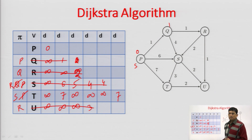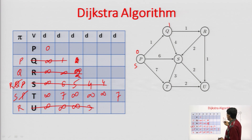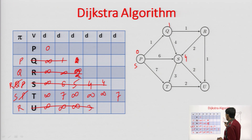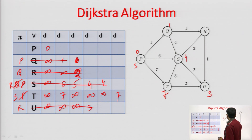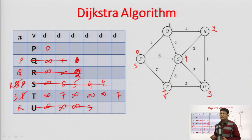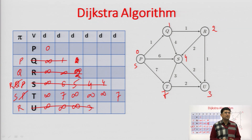So the final shortest distances from source P are: Q = 1, S = 4, T = 7, U = 3, R = 2. Through the predecessors, you can find out which path was followed. In this lecture, we saw how Dijkstra's algorithm is applied for single source shortest path.